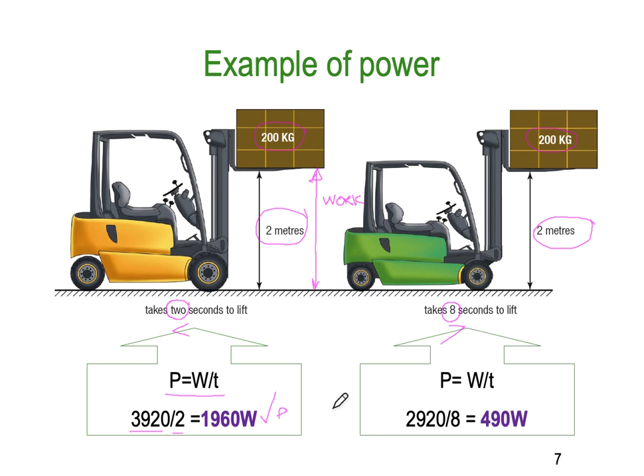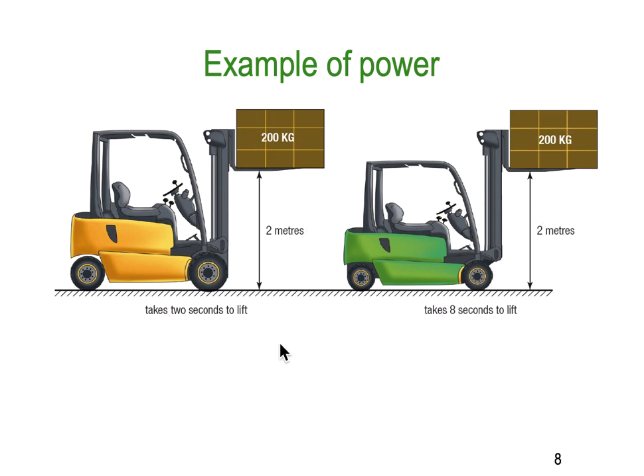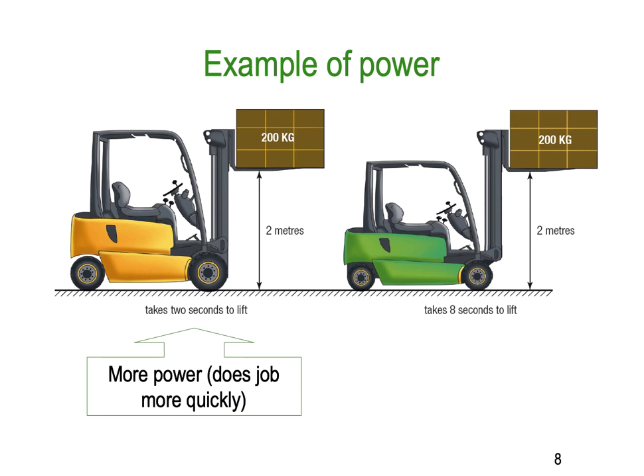The smaller forklift: power equals work divided by time again. Same amount of work done, 3920 joules divided by eight, very much less power, so 490 watts. You don't need a more powerful forklift but you're going to have to sacrifice some time. More power, job done more quickly; less power, job done more slowly. You're simply sacrificing power against time.